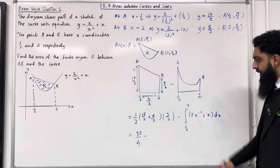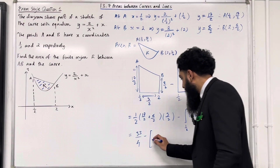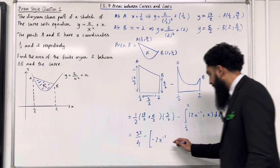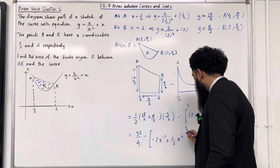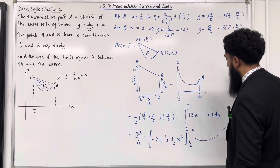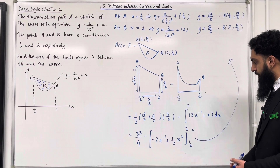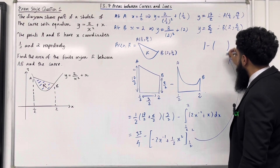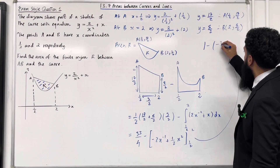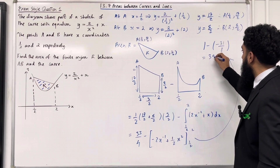Minus — I need to integrate this. Open square bracket, term by term integration: the first term integrates to minus 2x to the power of minus 1 (add 1 to the power, divide by the new power); the second term integrates to plus one half x squared. Close square bracket, taking limits from one half to 2. Substituting the upper limit x equals 2 gives 1 minus; substituting the lower limit x equals one half gives minus 31 over 8. Putting this into my calculator gives 39 over 8.